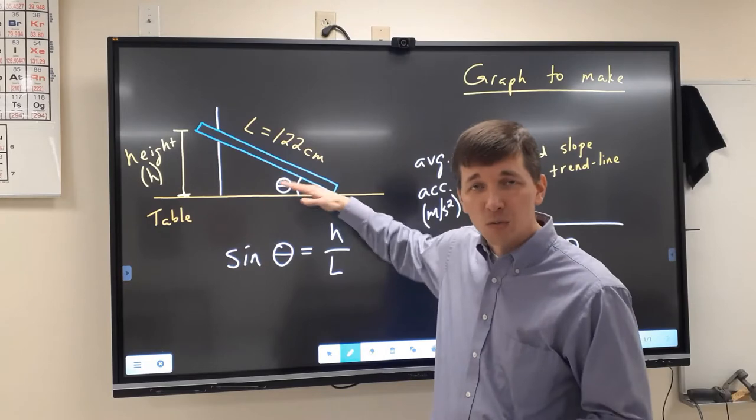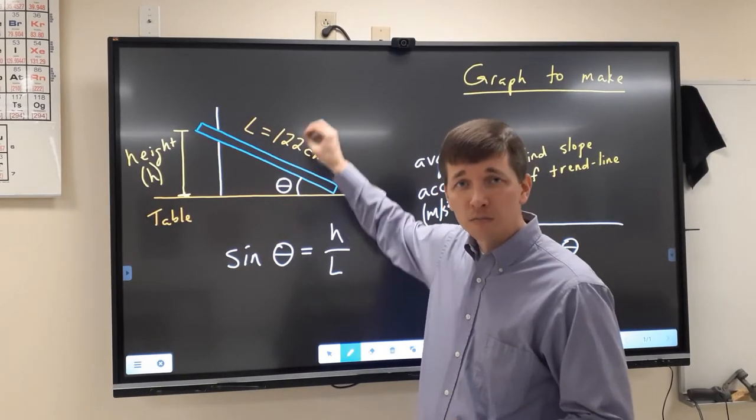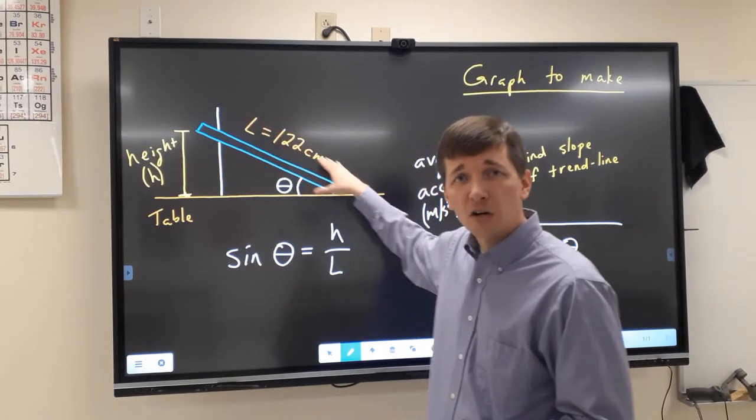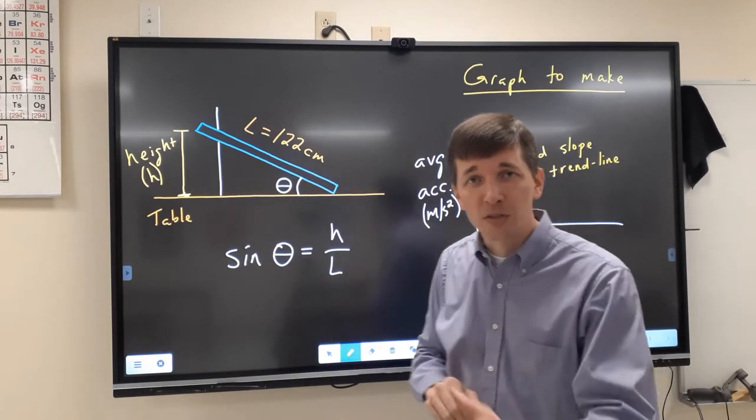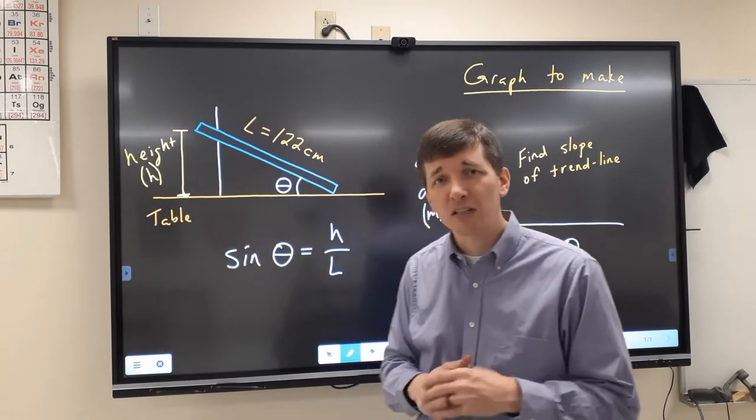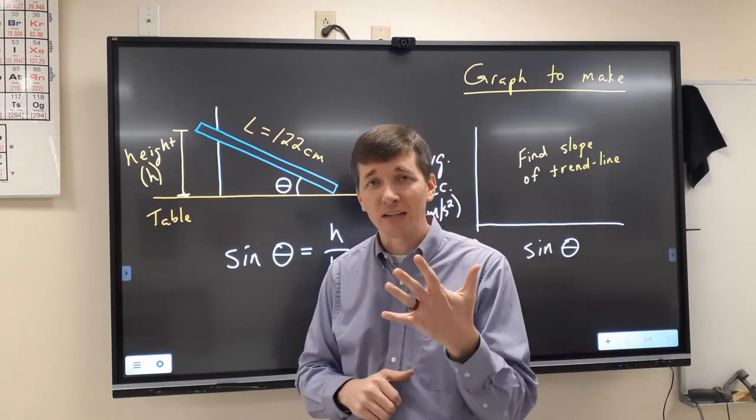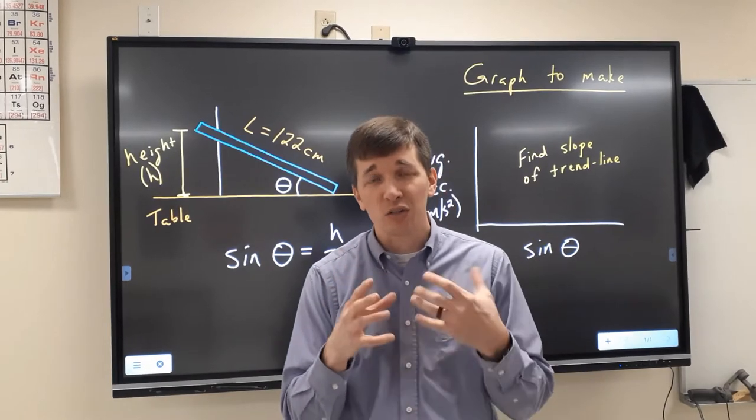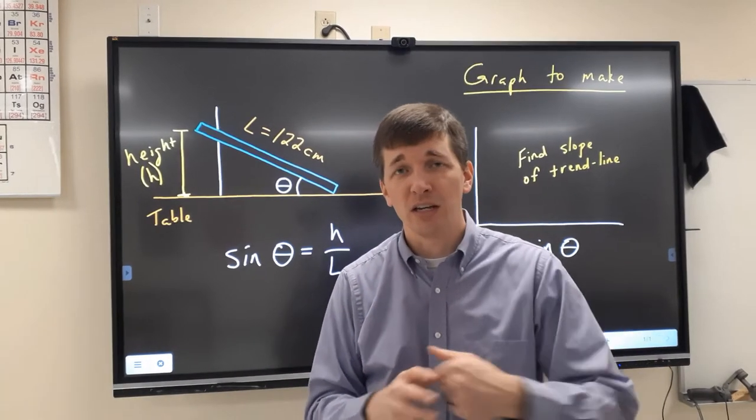We're going to be taking this ramp, setting it at some different heights, put a cart on top of that ramp, let it go, measure that cart's acceleration as it approaches the bottom of the ramp. We're going to test that at five different heights. And at each height, we're going to do three different trials so that you can get an average acceleration.